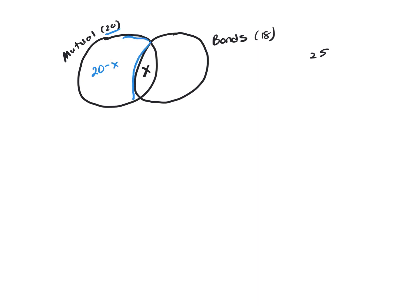And bonds, just bonds, would be 18 minus X. But we know we have a total of 25 clients.